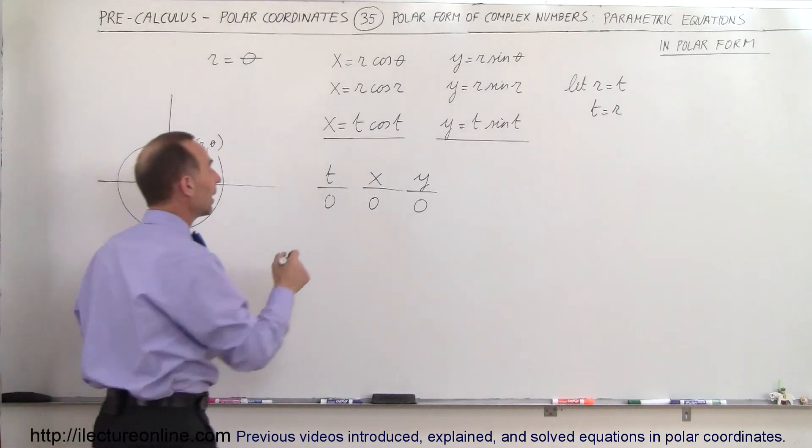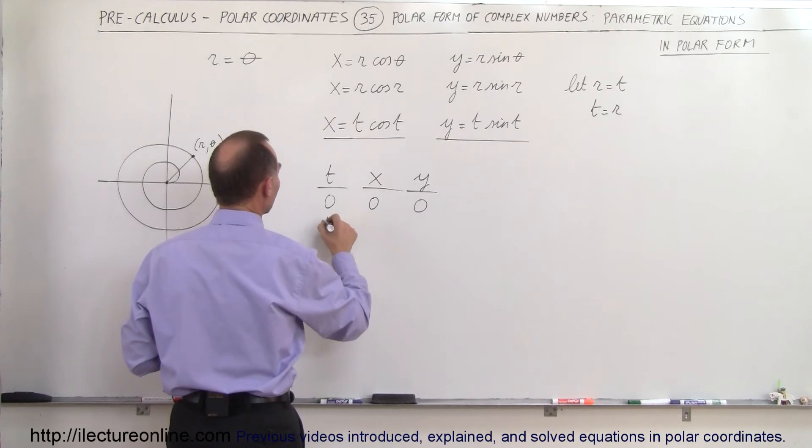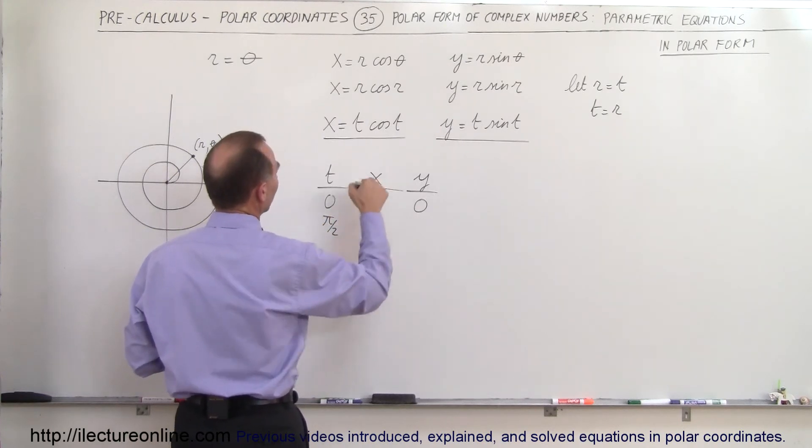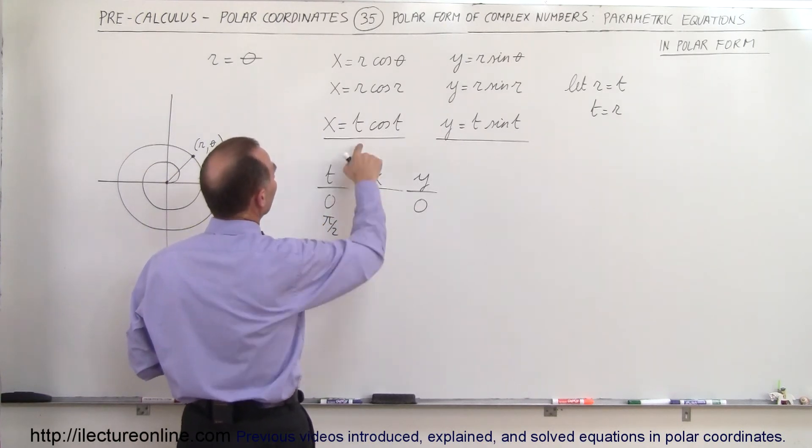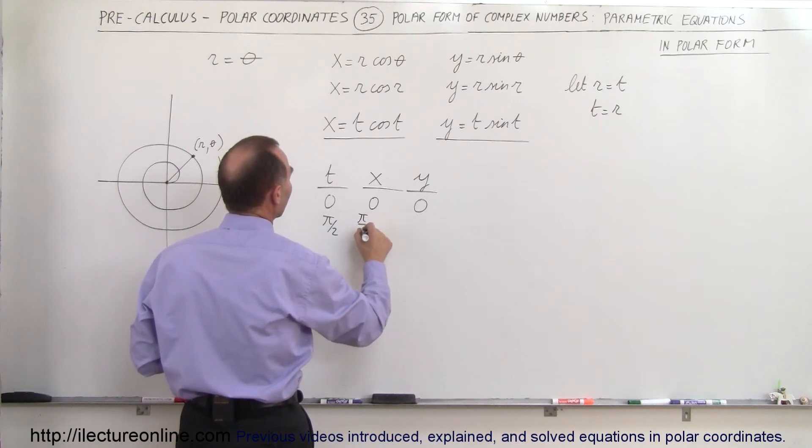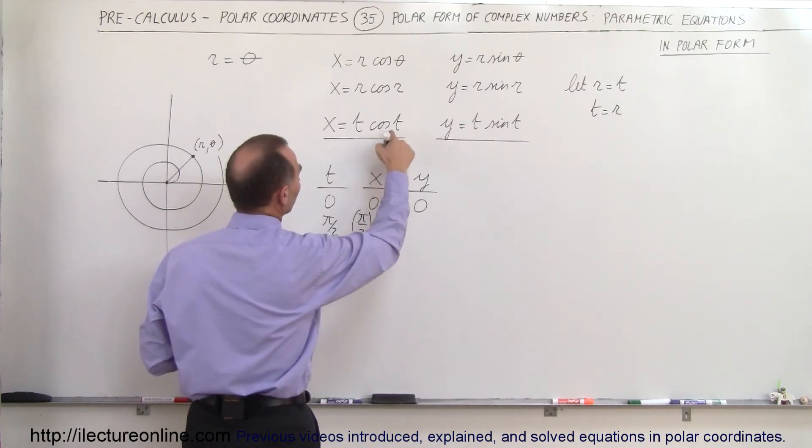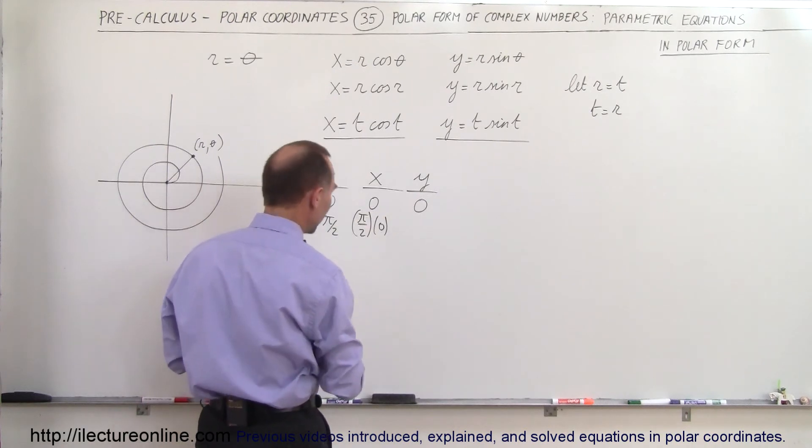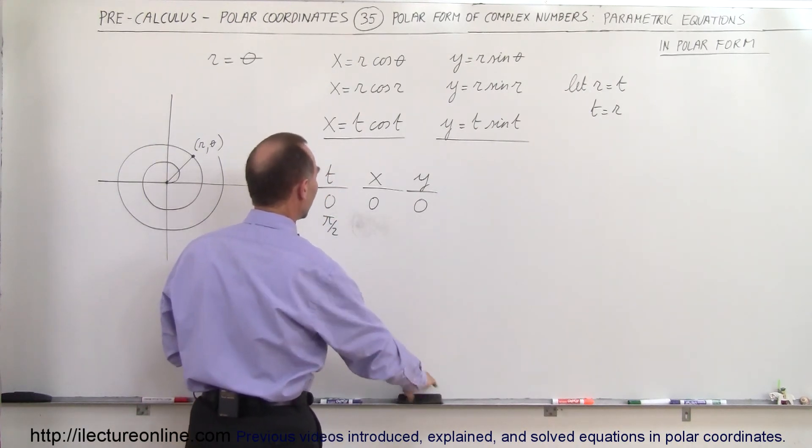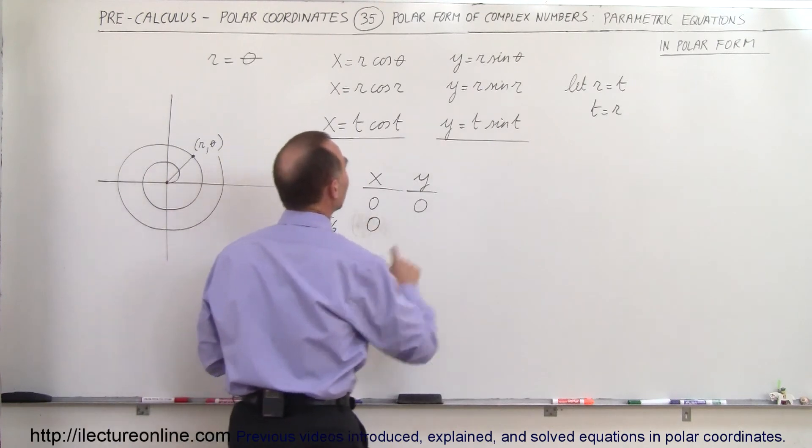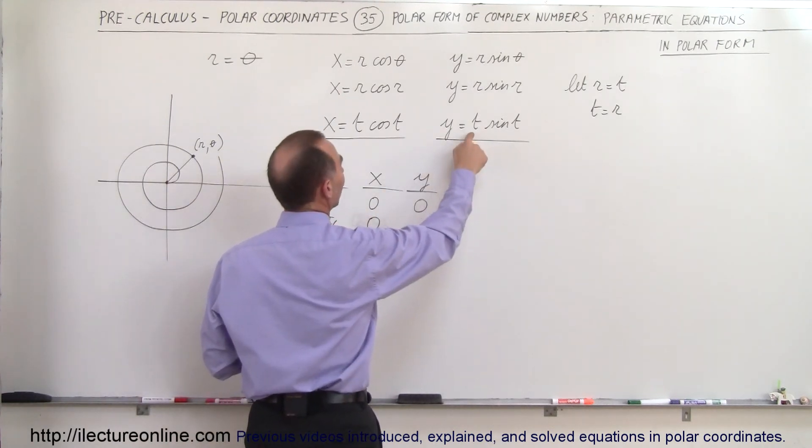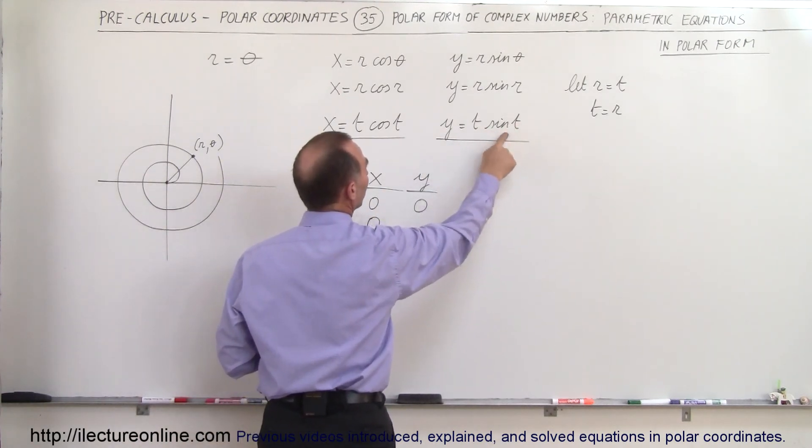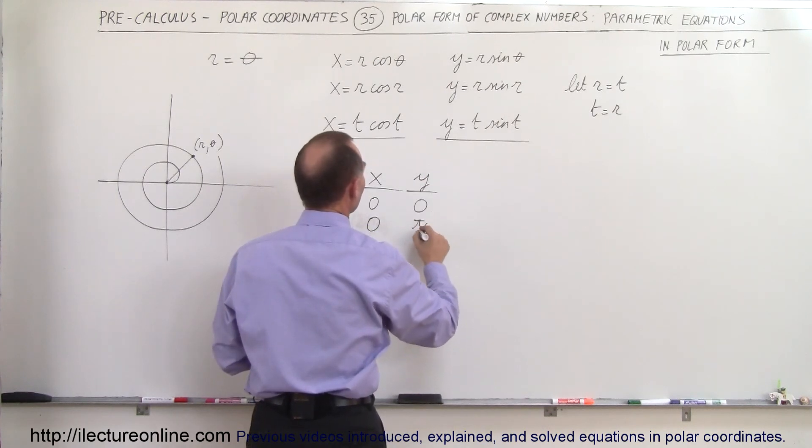Now let's say that t is equal to pi divided by two. Well, if it's pi divided by two, then x will be pi divided by two times cosine of pi over two, that of course would be zero. And if t is equal to pi divided by two, sine of pi divided by two is one, so that would be pi divided by two.